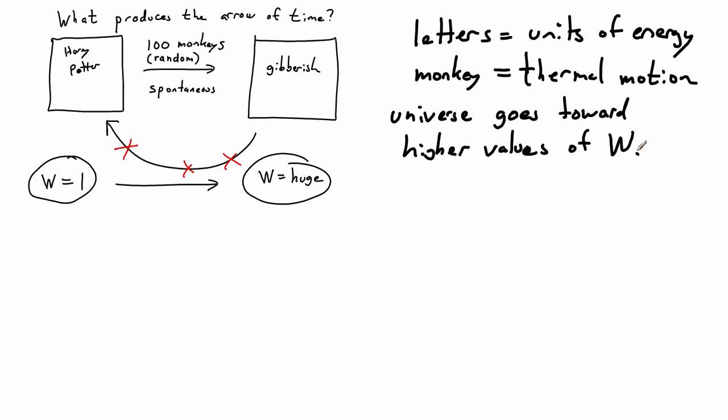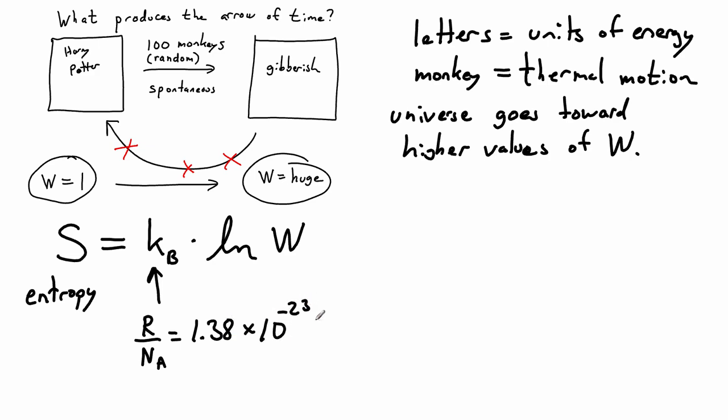Now what does all this have to do with chemistry? Boltzmann came up with a definition of entropy that we're going to use. So S is entropy, and entropy is a constant times the natural logarithm of W. Boltzmann's constant is just a number - it's actually the gas constant R divided by Avogadro's number, and that comes out to be 1.38 times 10 to the negative 23 joules per Kelvin. So it's just a constant. This constant times the logarithm of the number of ways of arranging your units of energy gives you the entropy of the system.